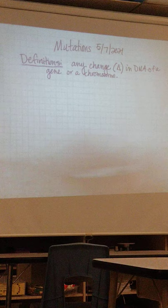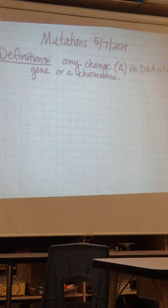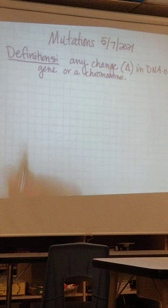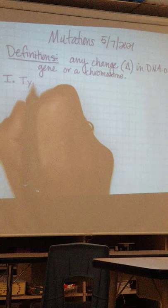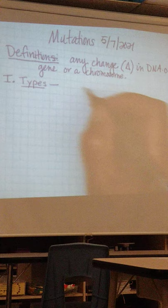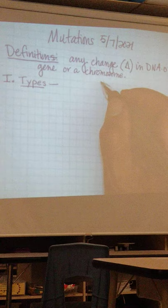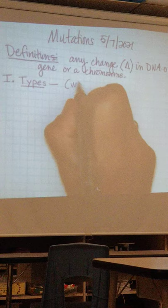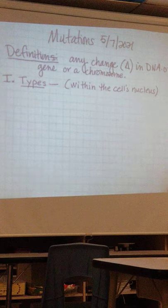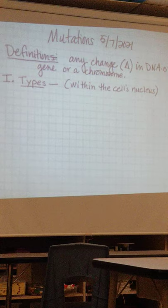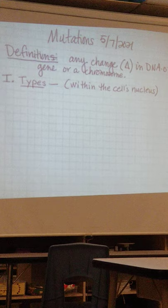That's the definition there, any change in the DNA of a gene or a chromosome. We're going to look at different types of mutations. We know that mutations occur inside animals and plants, anything that's living, and it happens within the cells, within the cell's nucleus. Any cell that has a nucleus could have a potential for a mutation. That's where all your DNA is located.